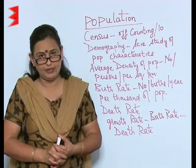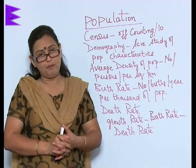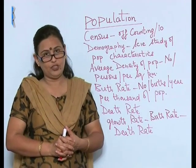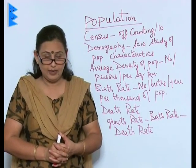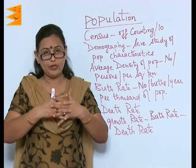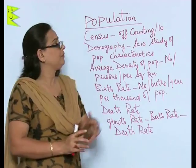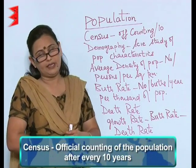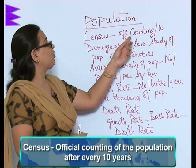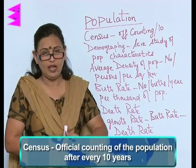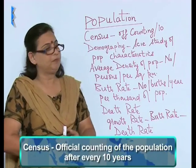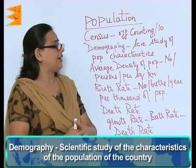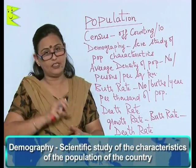What would happen to the world if there were no human beings? If people are so important, we definitely have to study about them. But before I start with the chapter, let's learn about a few terms which are going to come again and again in the chapter. Census — this is one word which most of you must have heard. It is in fact the official counting of the population after every 10 years. Demography is the scientific study of the characteristics of the population of the country.